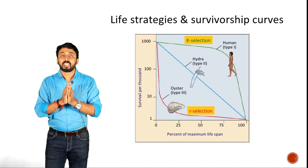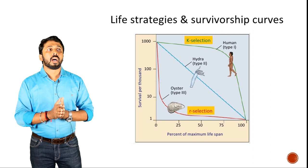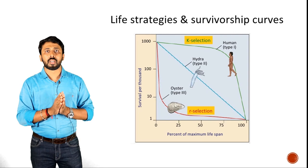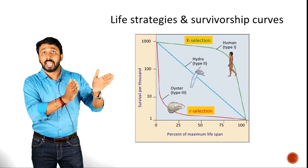In the case of humans and elephants — mammals — sexual maturity does not come directly after birth; it takes time. They produce very few individuals and take care of them for a longer time, exhibiting parental care. That kind of strategy is known as K strategy.